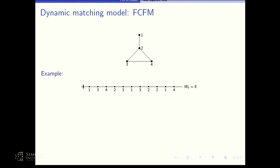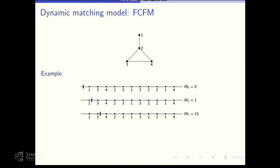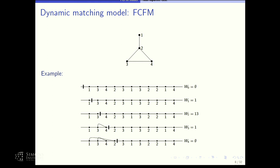Let me give a quick example to make the model clear. We denote by W_n the word of unmatched items at time n. Starting from an empty system at time zero: at time one, item one arrives; at time two, item three arrives — they are not compatible, so the current word is {1, 3}. Then item four arrives and can be matched with item three, so we are left with just item one. Eventually we return to the empty system and continue.